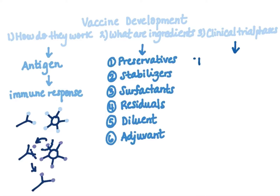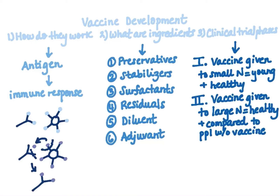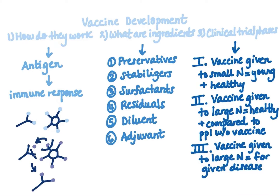Number three: the different phases of clinical trials. Phase one — the vaccine is administered to a small number of usually young and healthy people. Phase two — the vaccine is given to a larger sample of healthy individuals, compared to people without the vaccine. Phase three — the vaccine is administered to an even larger sample of people specific to the given disease, with two goals in mind: assessing the safety and effectiveness of the vaccine.